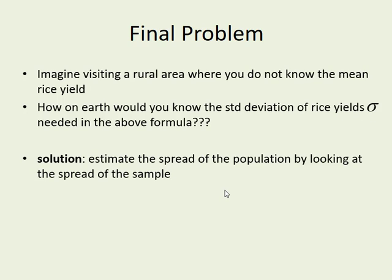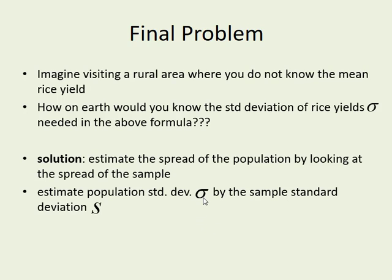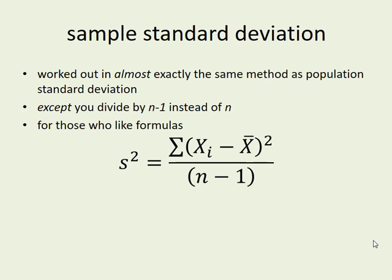More accurately, you estimate the population standard deviation by using the sample standard deviation. So you work out the standard deviation of your sample numbers and use that to estimate this. The final catch here is that you don't quite use the same formula as you might have been used to before. It's almost exactly the same method except this time instead of dividing by n you divide by n minus 1. This is the formula here. This is actually the formula for the sample variance because of this squared. After you've done this you must remember to press square root to get the final sample standard deviation.